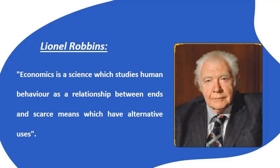The key points of Professor Robbins's definition are that wants are unlimited. Human beings are ready with another want immediately once one want is fulfilled — today you may need a book, tomorrow you may want another book, and the next day you may want pens or pencils. The means are comparatively limited — the resources available in the world are scarce in nature.